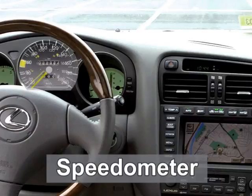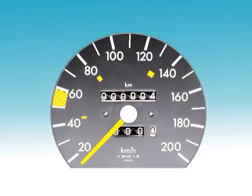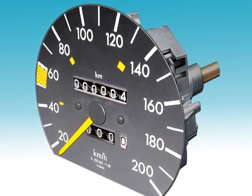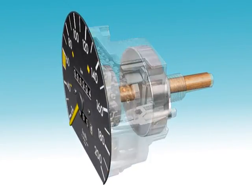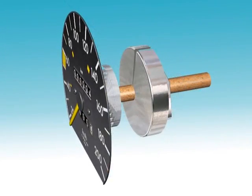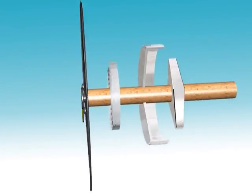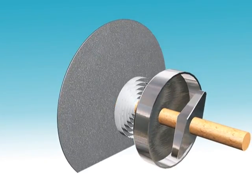Speedometer: In the speedometer of an automobile, a small magnet is geared to the main shaft of the vehicle and it rotates according to the speed of the vehicle. The magnet is mounted in an aluminum cylinder with the help of hair springs.